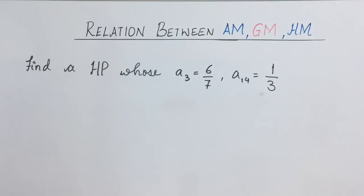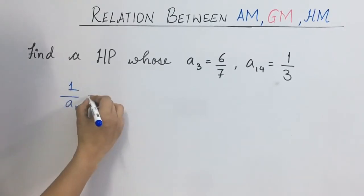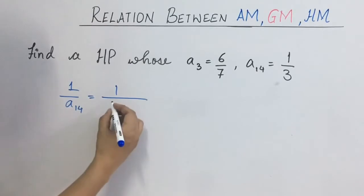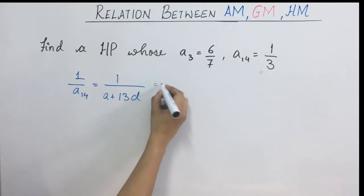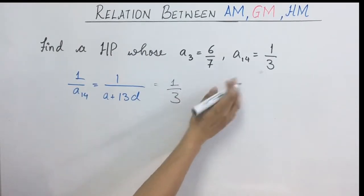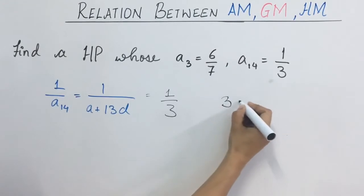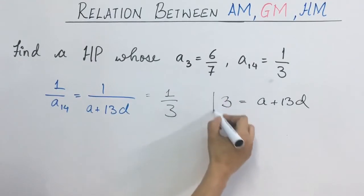Find a HP whose third term is 6 by 7 and 14th term is 1 upon 3. By the expression of nth term of an HP, A14 will be 1 upon A plus 14 minus 1 into D, that is 1 upon A plus 13D. This is equal to 1 upon 3. So we get an equation, 3 equals to A plus 13D.